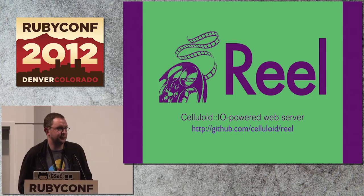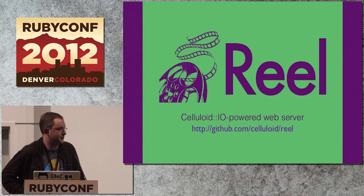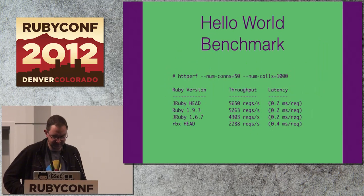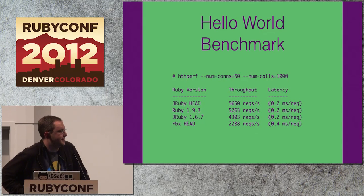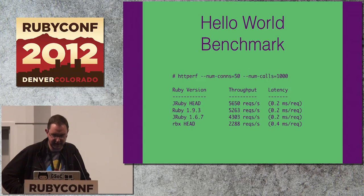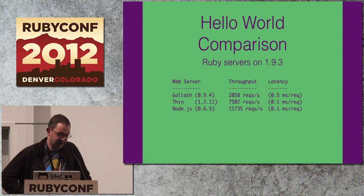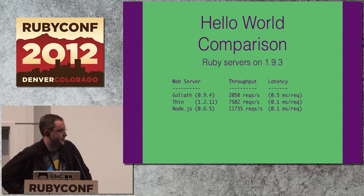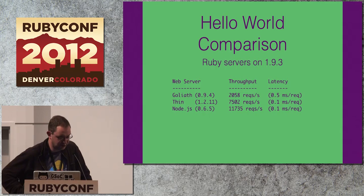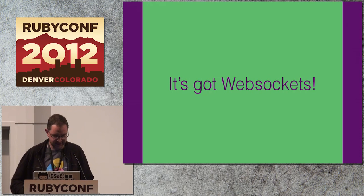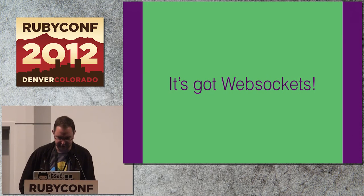Finally I want to talk about Reel — a web server I wrote built on Celluloid IO. It's relatively fast and relatively low latency. Here are some numbers for comparison: Thin is about 50% faster, Node is approximately twice as fast. But I'm still beating Goliath, which is probably the closest analog to Reel. And it's got WebSockets — let me see if I can demo this.